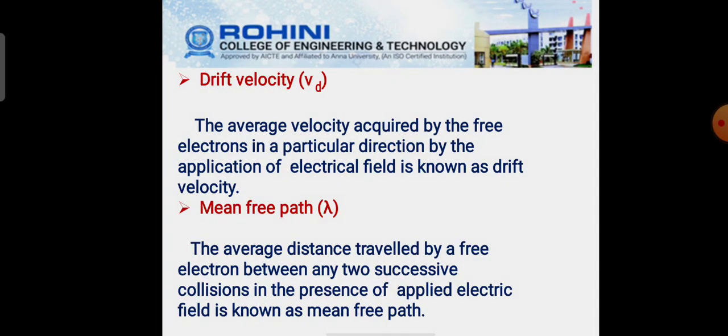Next one, some of the important definitions or terms. First one is drift velocity. The average velocity acquired by the free electrons in a particular direction by the application of electric field is known as drift velocity. Next one is mean free path. The average distance traveled by a free electron between any two successive collisions in the presence of applied electric field is known as mean free path.